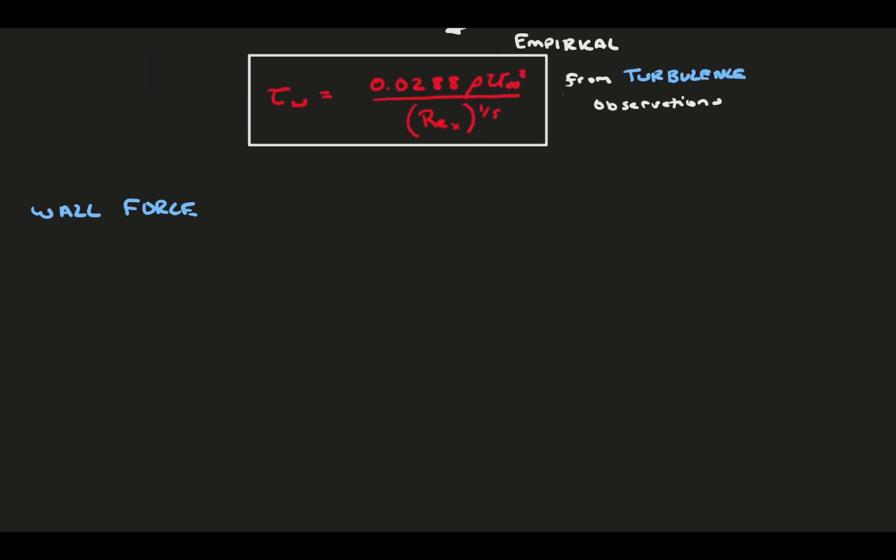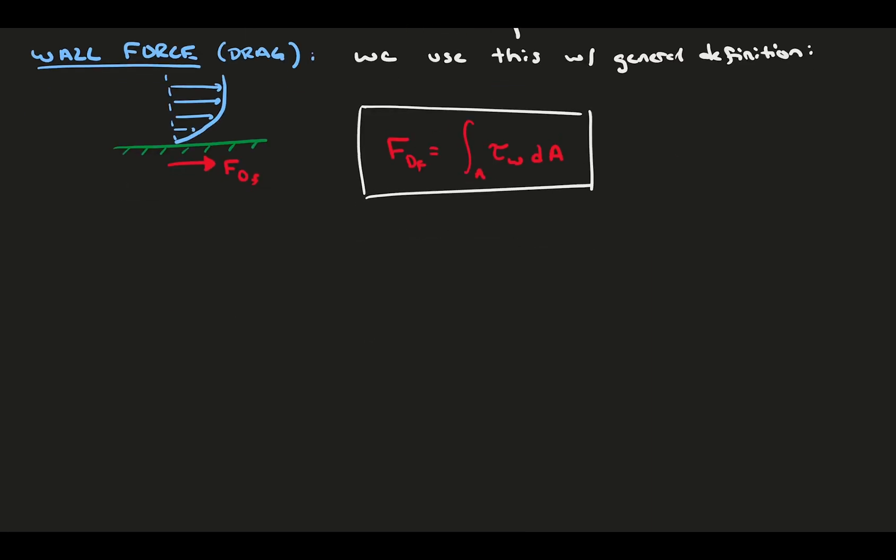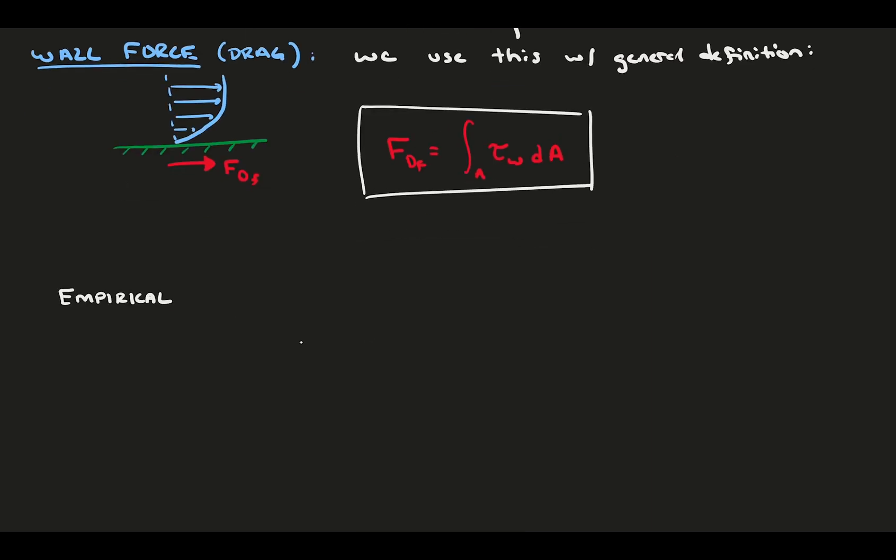Interestingly, this equation indicates that the local wall shear decreases as you move further downstream, the same as for a laminar boundary layer. This is because the flow grows and the velocity gradient near the wall lessens as it grows vertically. And as we know, this wall shear leads to a flow creating a force on the plate or surface. Let's take the wall shear and turn it into the wall force, typically referred to as the viscous drag. Generally, the force on the wall due to shear stress is the area integral of the wall shear. This works for both laminar and turbulent flow. If we stick our function for wall shear into this, and we assume our flat plate has some width w, we can get another empirically motivated formula relating wall force to the velocity, density, geometry, and Reynolds number.